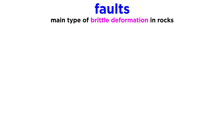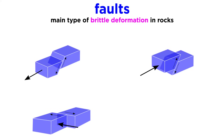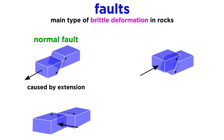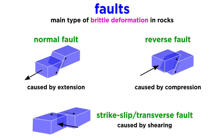Faulting is the main type of brittle deformation in rocks. Faults are classified based on the type of deformation that creates them. Normal faults are caused by extension, reverse faults by compression, and strike-slip or transverse faults by shearing.